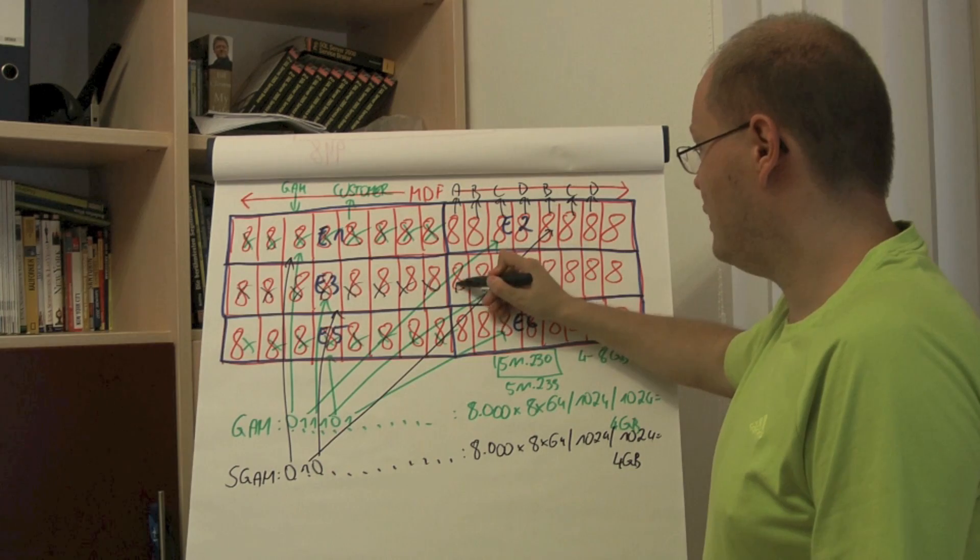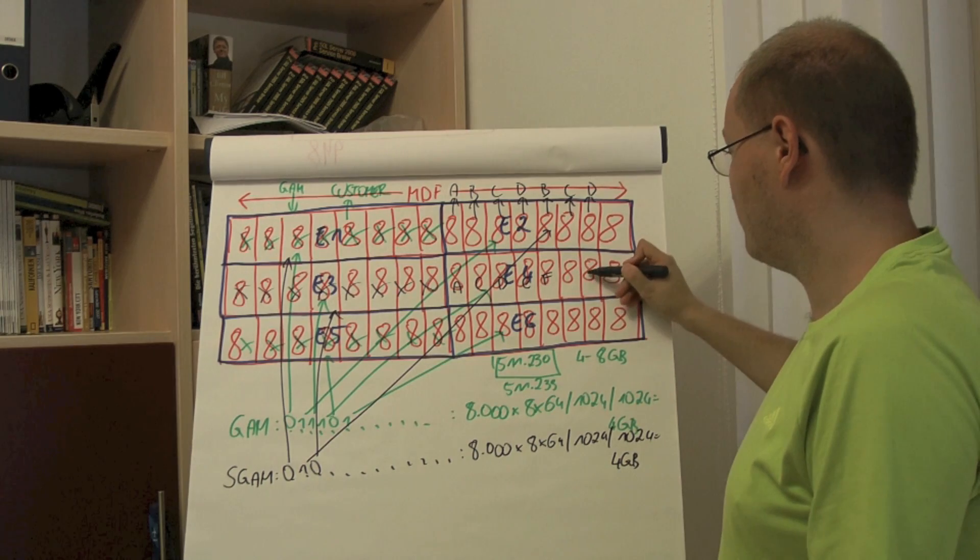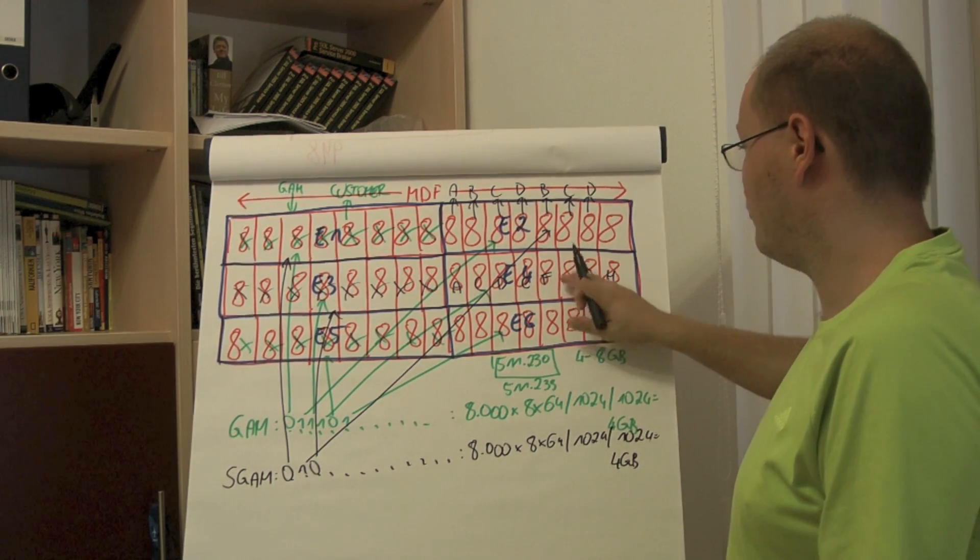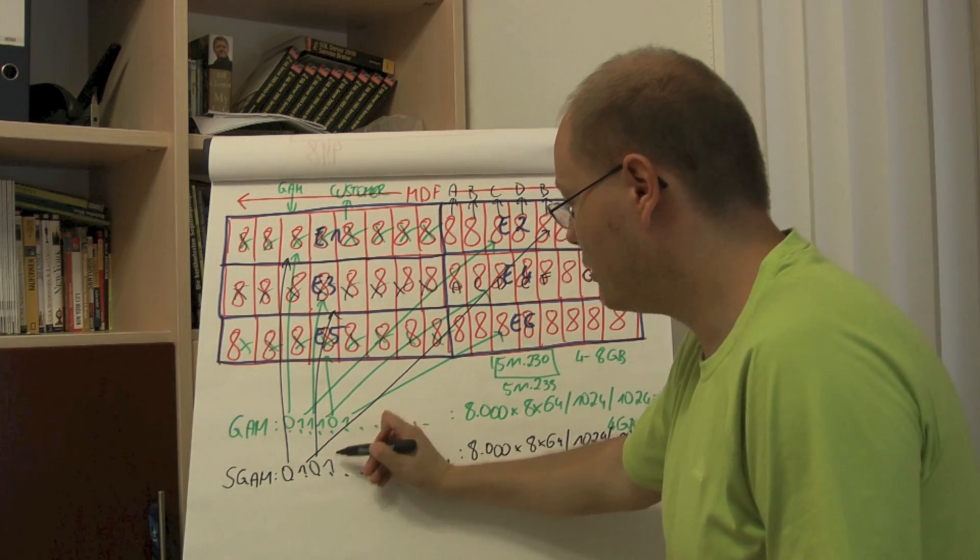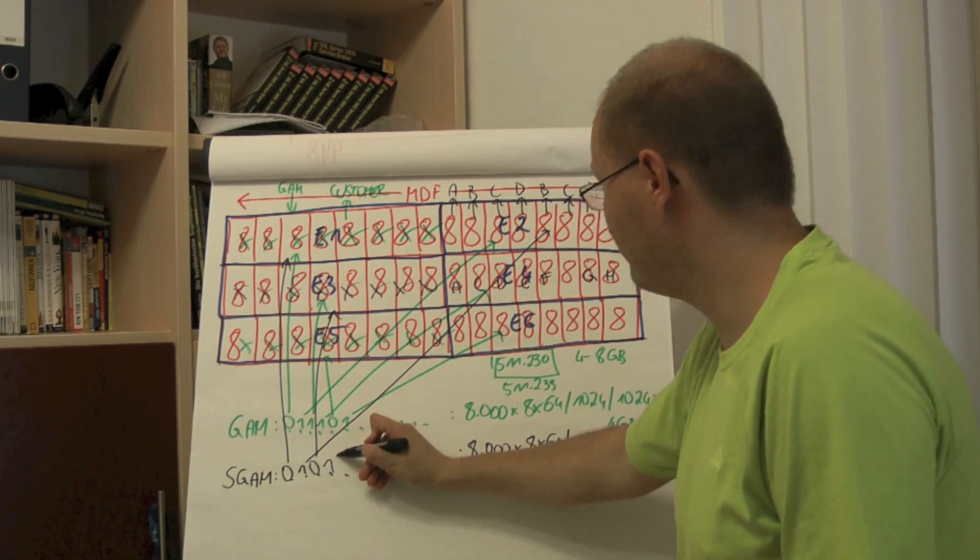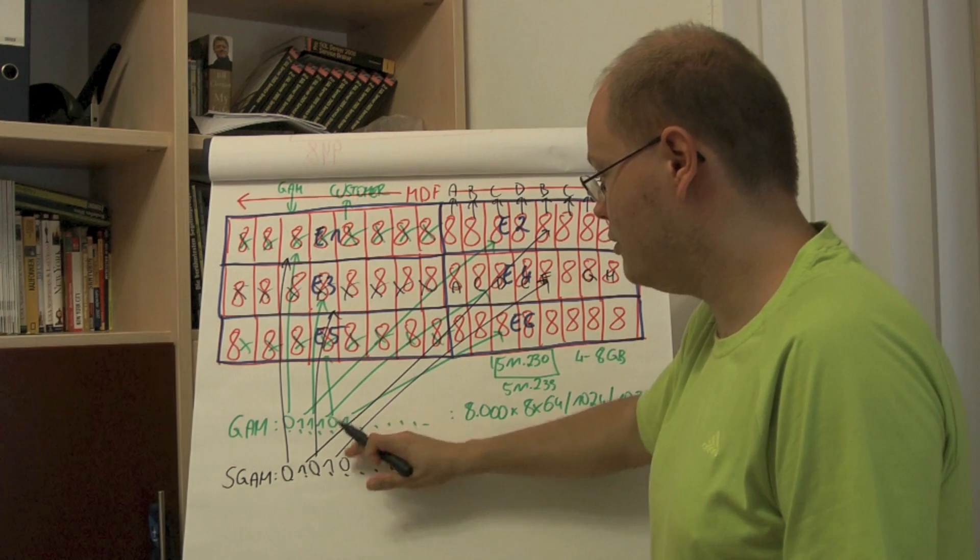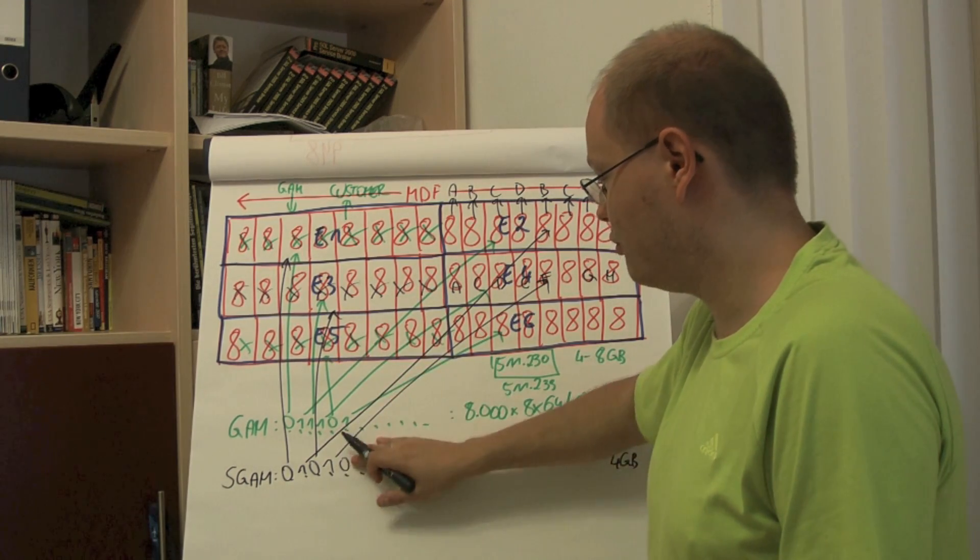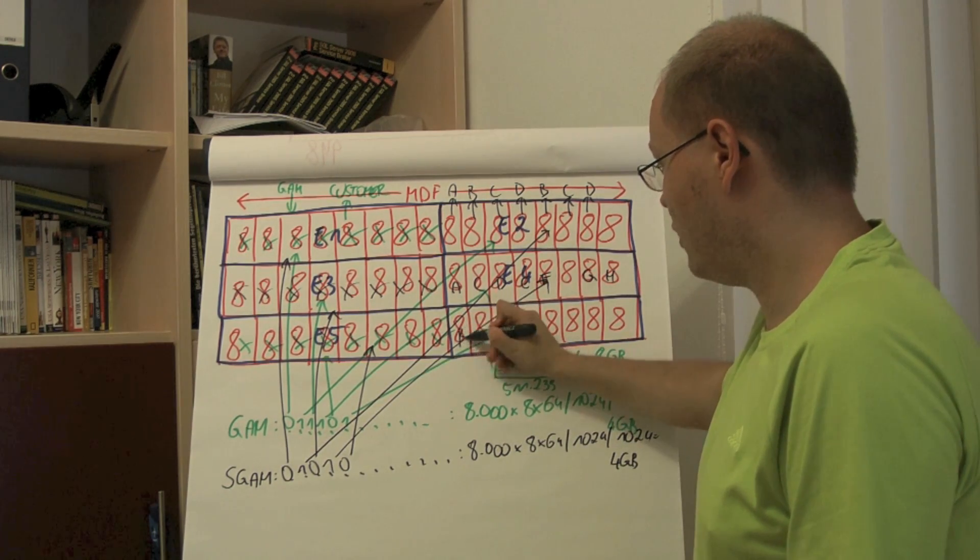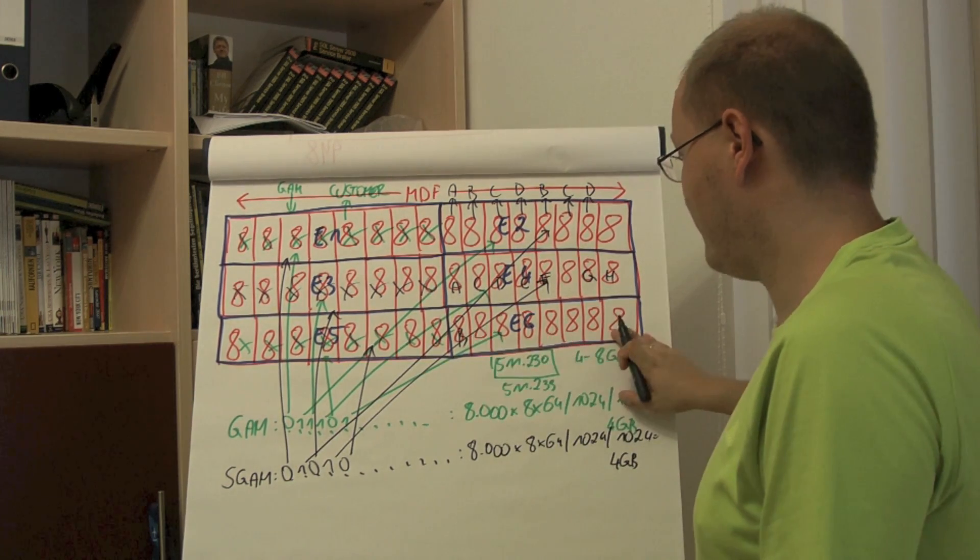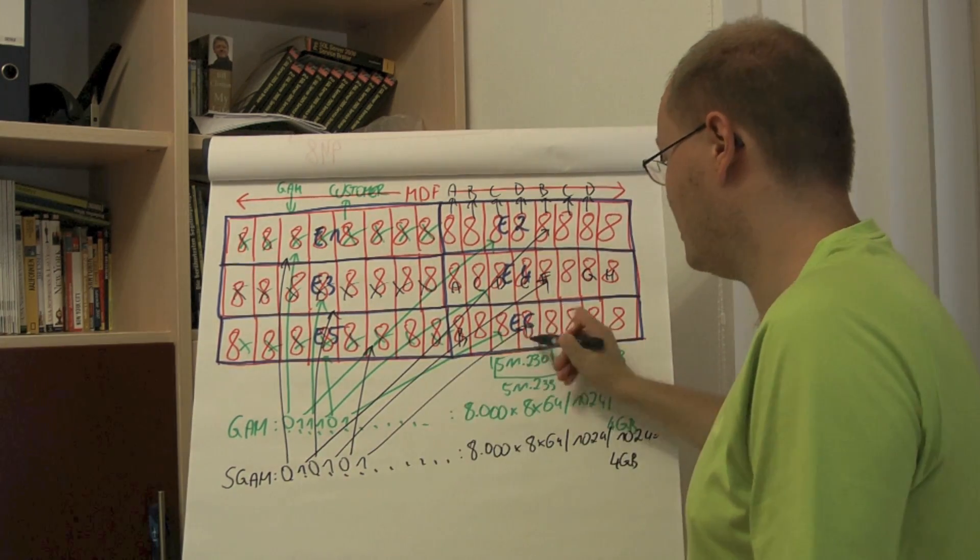So, again, when we have here allocated to some objects, our pages, and we have at least one free page available, then the corresponding bit in the SGAM page is set. The fifth extent is a uniform extent, which means the corresponding bit is not set. And finally, imagine we have here one page allocated, we have seven pages free, which means the bit in the SGAM page again is set.